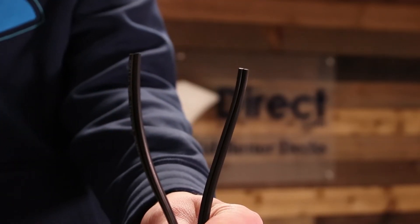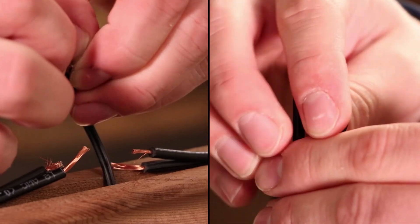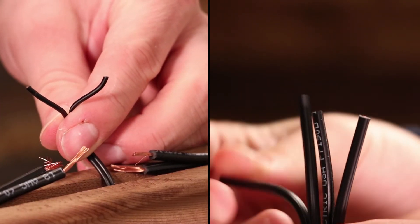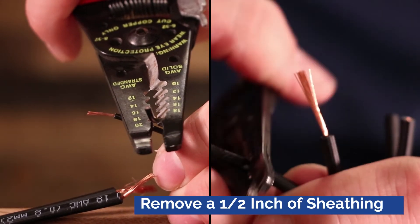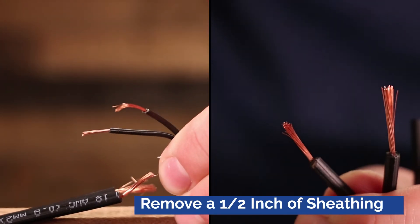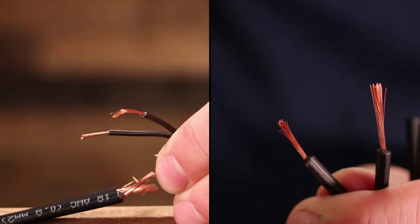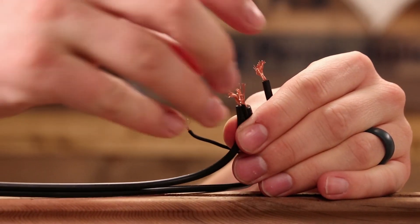Separate each wire pair into two to three inch strands. Use wire strippers to remove a half inch of sheathing from each wire, including the wires on the light fixture.